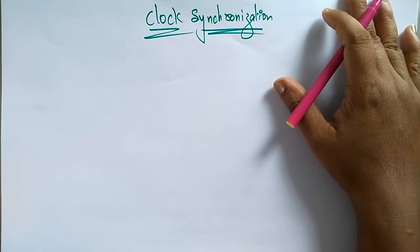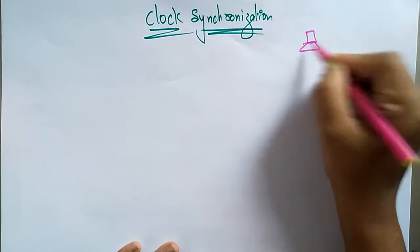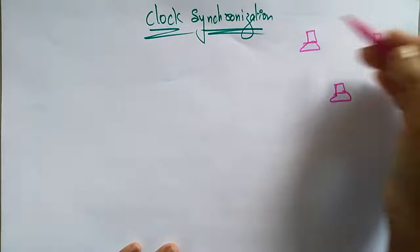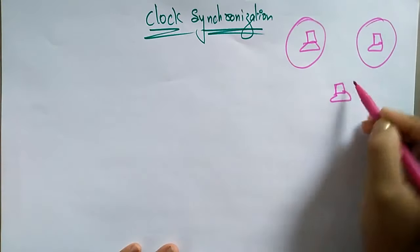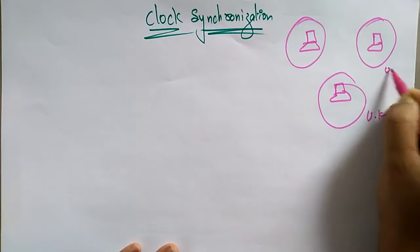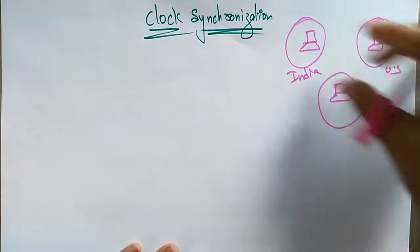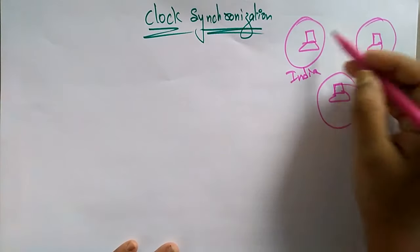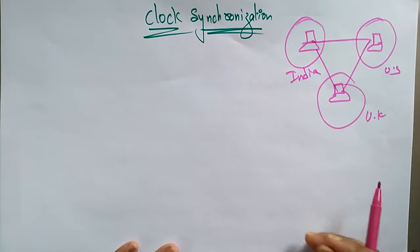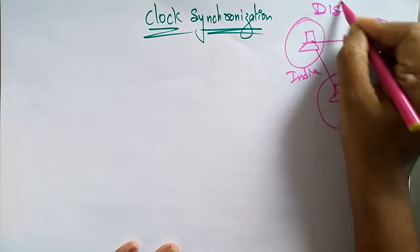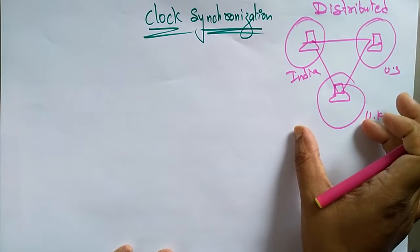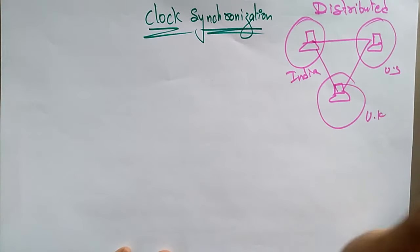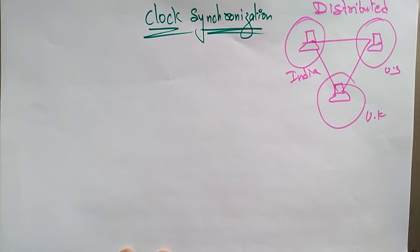So how can I manage the clock and synchronize the system? Suppose we have one system, another system, another system — let's take three systems present in different countries: UK, US, and India. All the systems in different countries are going to communicate with each other, so it is a distributed environment. In this distributed environment, I want to maintain data that is sent or received in a synchronized manner, so the clock has to be synchronized.